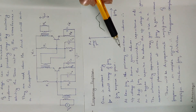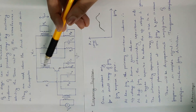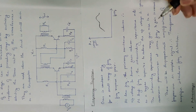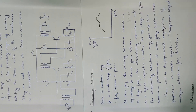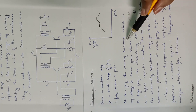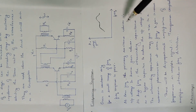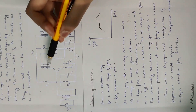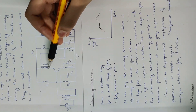At low frequencies, the primary reactance reduces. XL equals jωL, so inductive reactance is directly proportional to frequency. At low frequency, the primary reactance reduces, which reduces the output voltage.